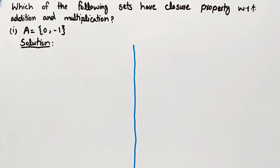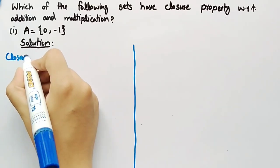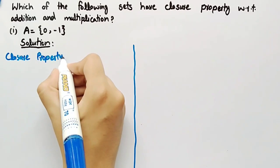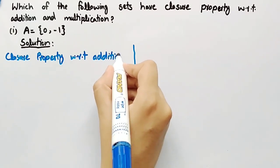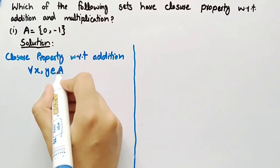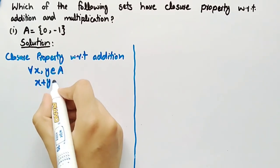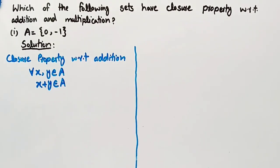Now coming towards the solution of the first part. Firstly we will check closure property with respect to addition. Its definition is: for all x, y belonging to set A, x plus y must also belong to set A. It means that whenever we add each element of set A one by one with each other element of set A, the answer must also be in set A. Then we can say that set A has closure property with respect to addition.